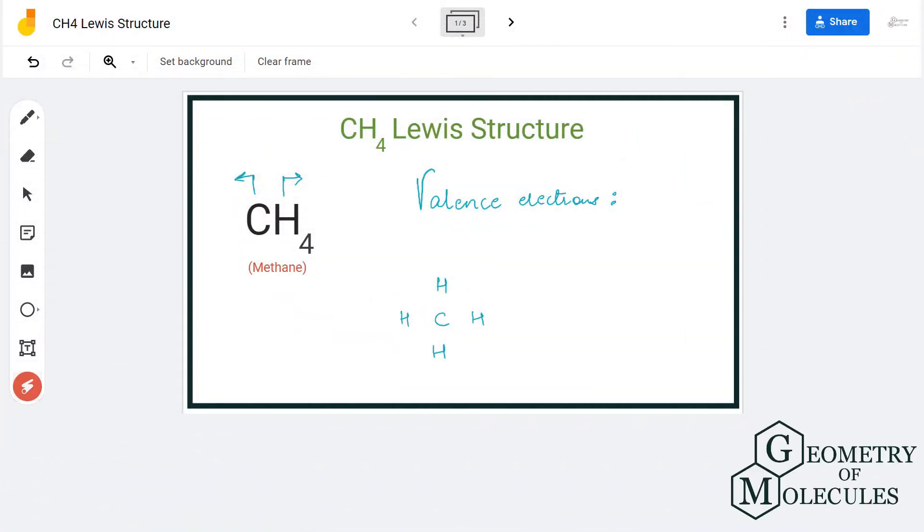Hi guys, today in this video we are going to look at the Lewis structure for CH4. It's the chemical formula for methane. It is made up of one carbon atom and four hydrogen atoms. To understand its Lewis structure, we will first need to know the total number of valence electrons.